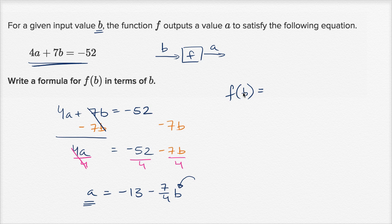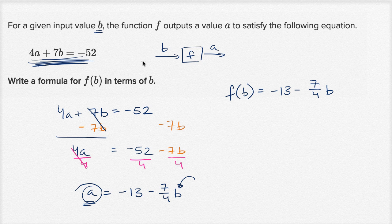the output of our function, which is f of a, the output of our function is going to be negative 13 minus 7 fourths b. Because the output of our function needs to be an a that will satisfy this equation up here. So hopefully that helped.